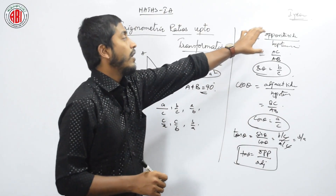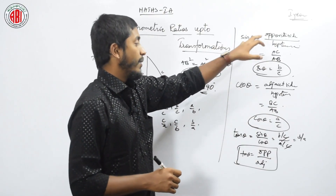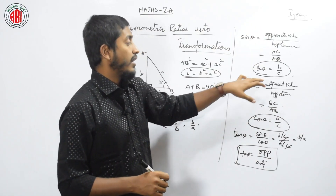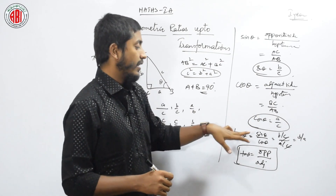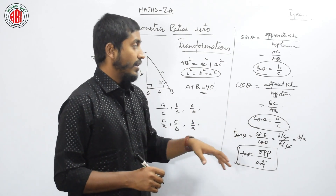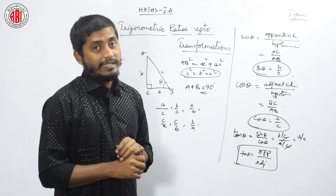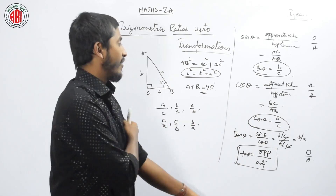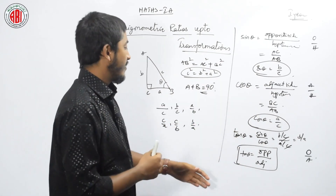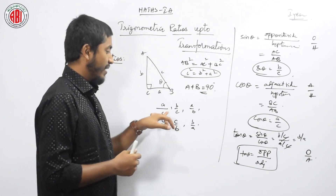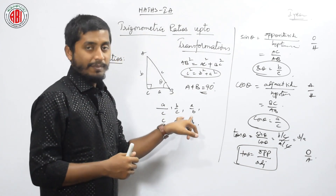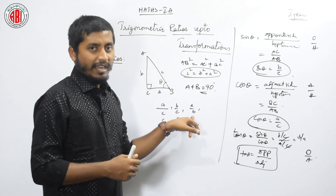What is sin theta? Opposite by hypotenuse. What is cos theta? Adjacent by hypotenuse. What is tan theta? Opposite by adjacent. From these three things we have discussed A by C, B by C, and A by B.